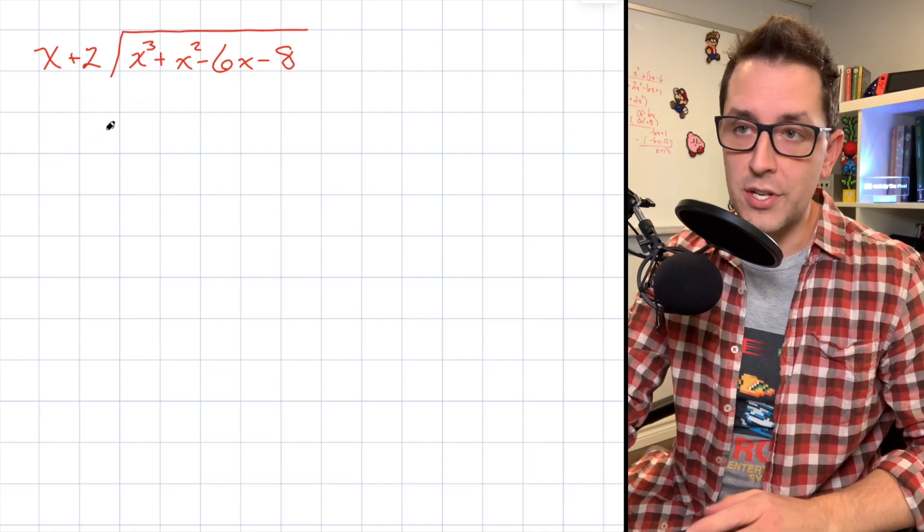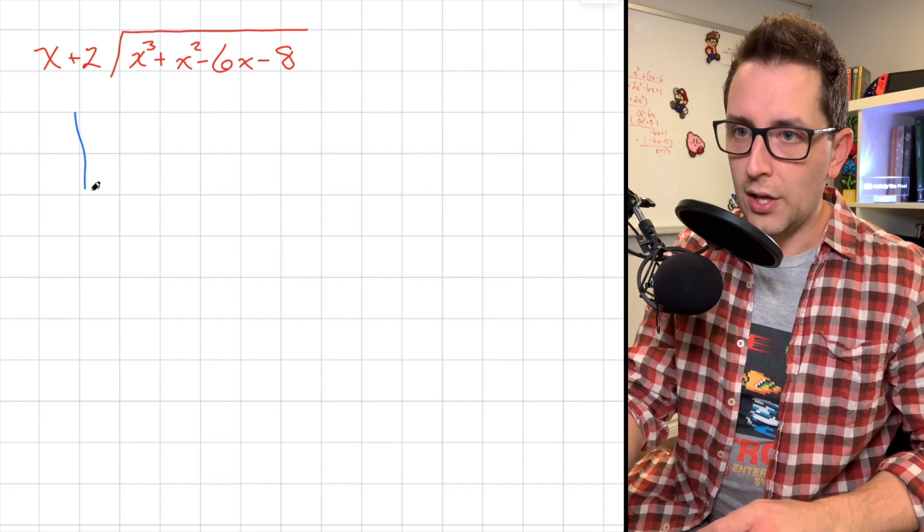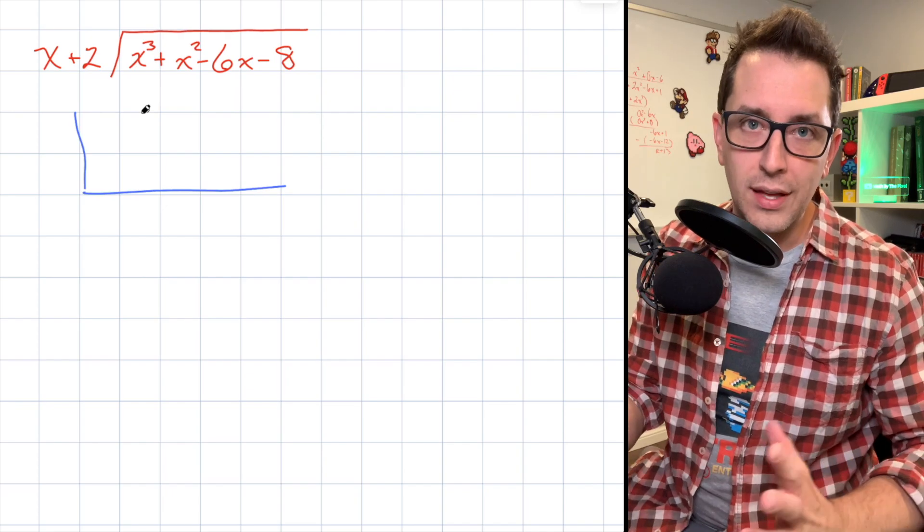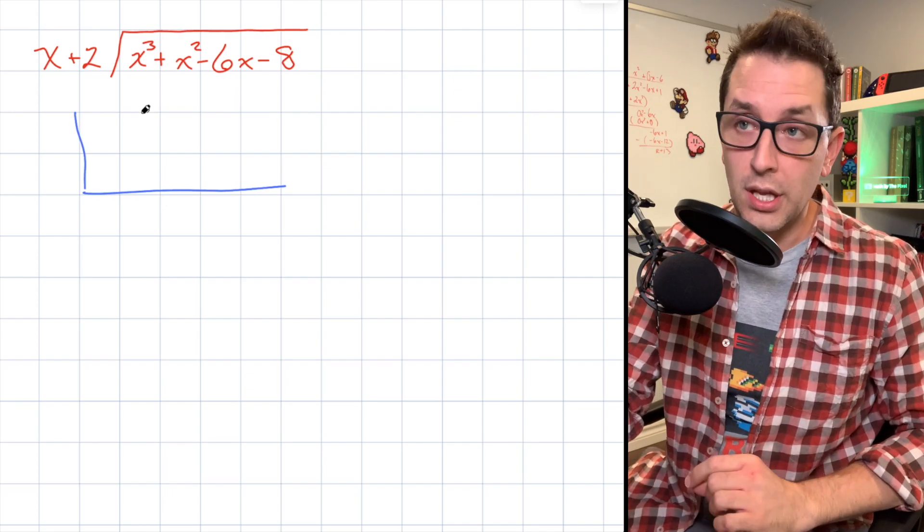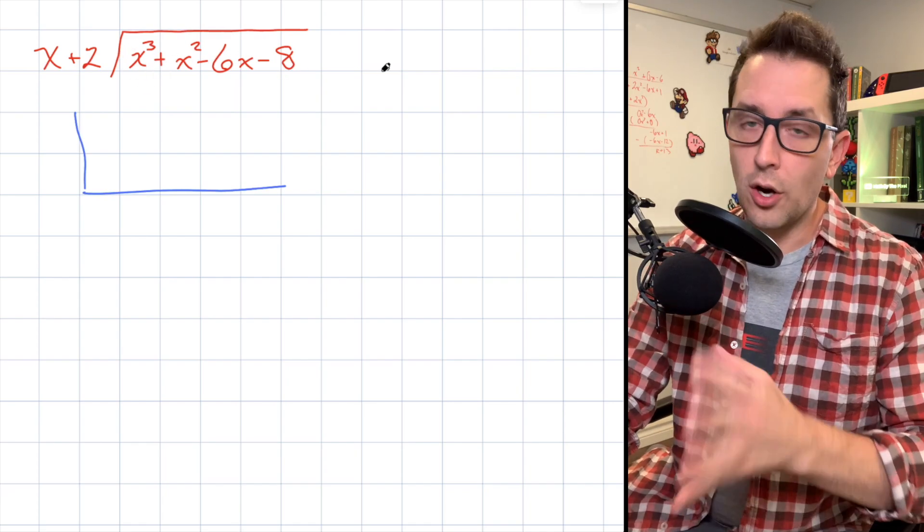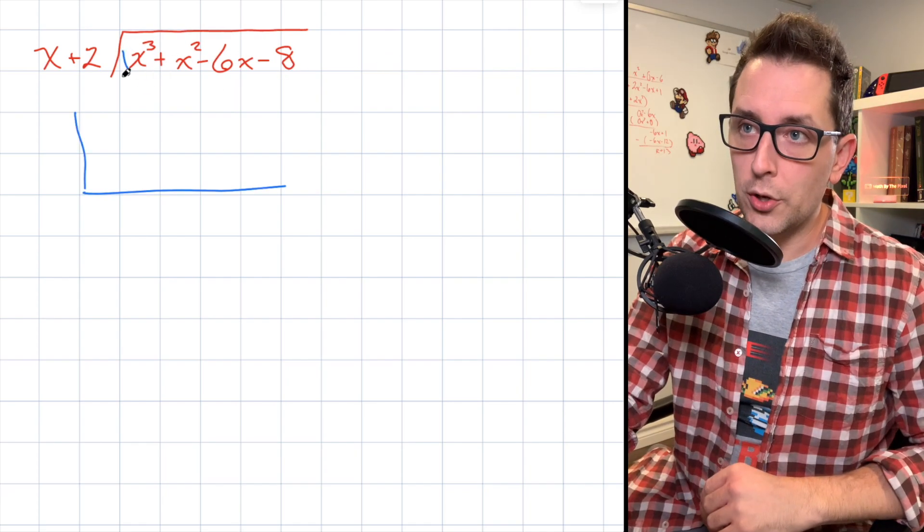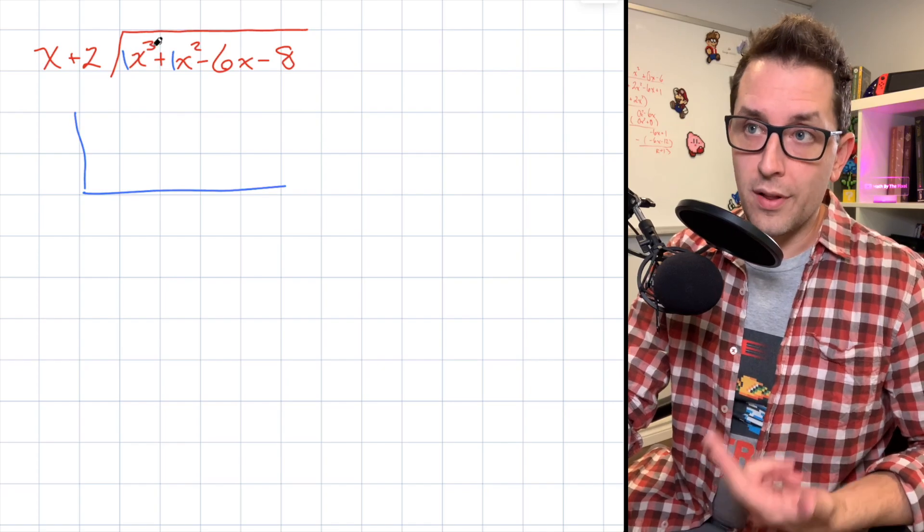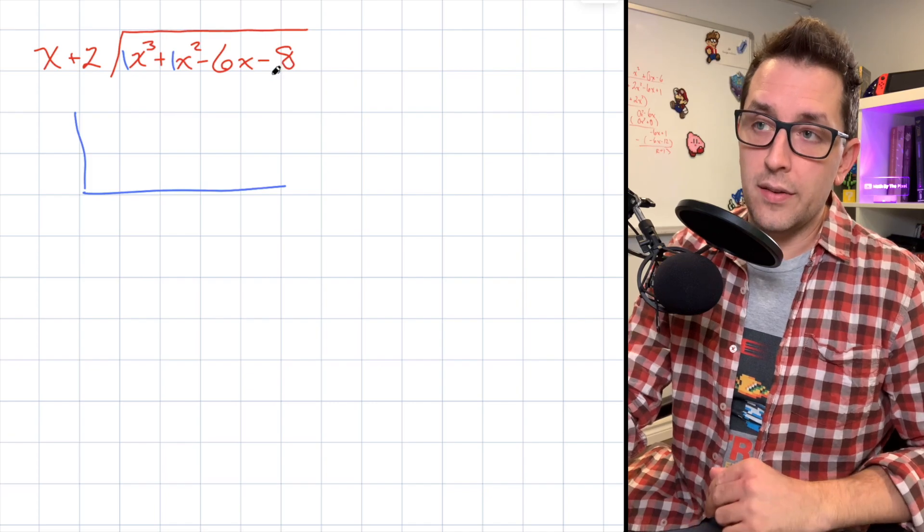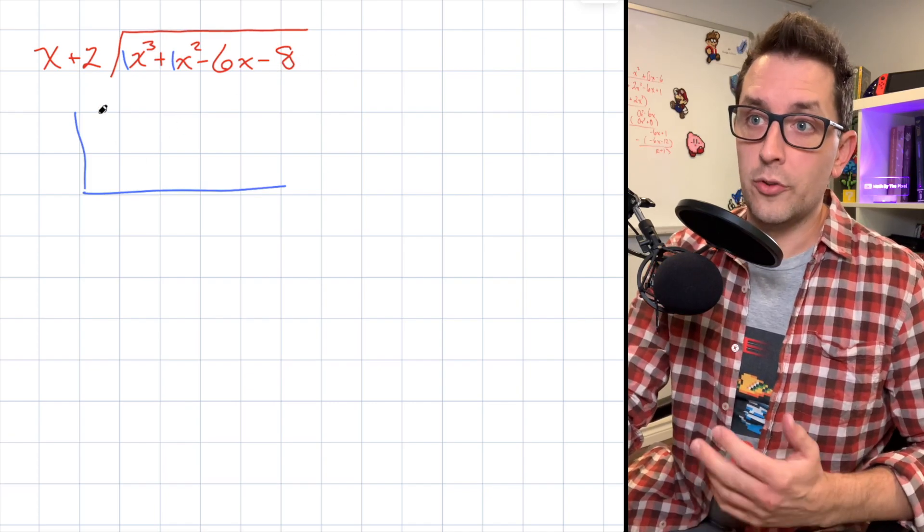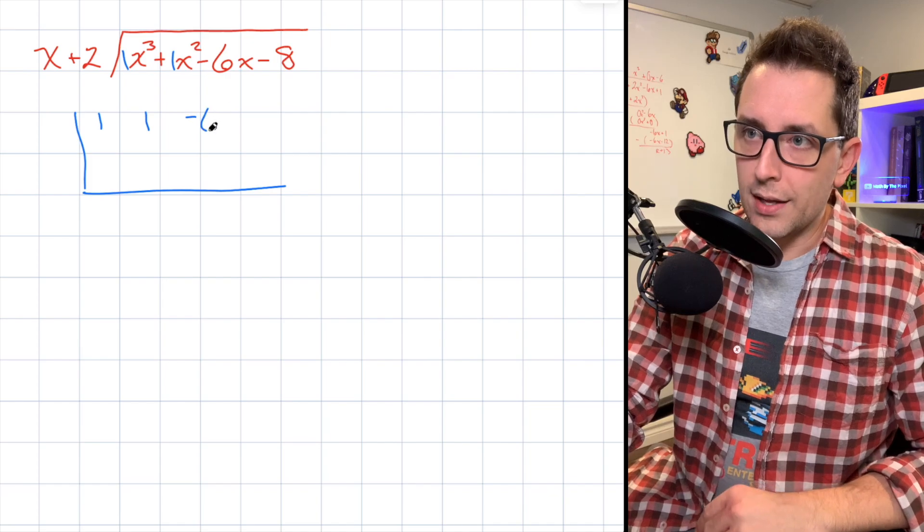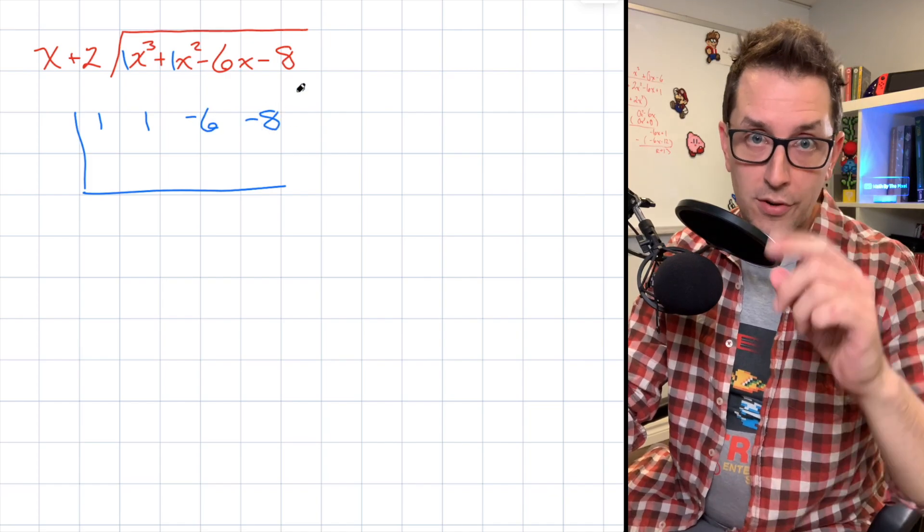The first thing you're going to do with synthetic division is draw this kind of random L bracket thing. Our goal is to fill this L bracket in with some key pieces of information. The first piece of information we need is the coefficients of each term in our dividend. So that's this cubic polynomial here, which has a coefficient of 1 in front of the x³, a coefficient of 1 in front of the x², a -6 in front of the x, and then we have just a -8 at the end. So I'm going to write each of those coefficients inside my L bracket thing. First step.